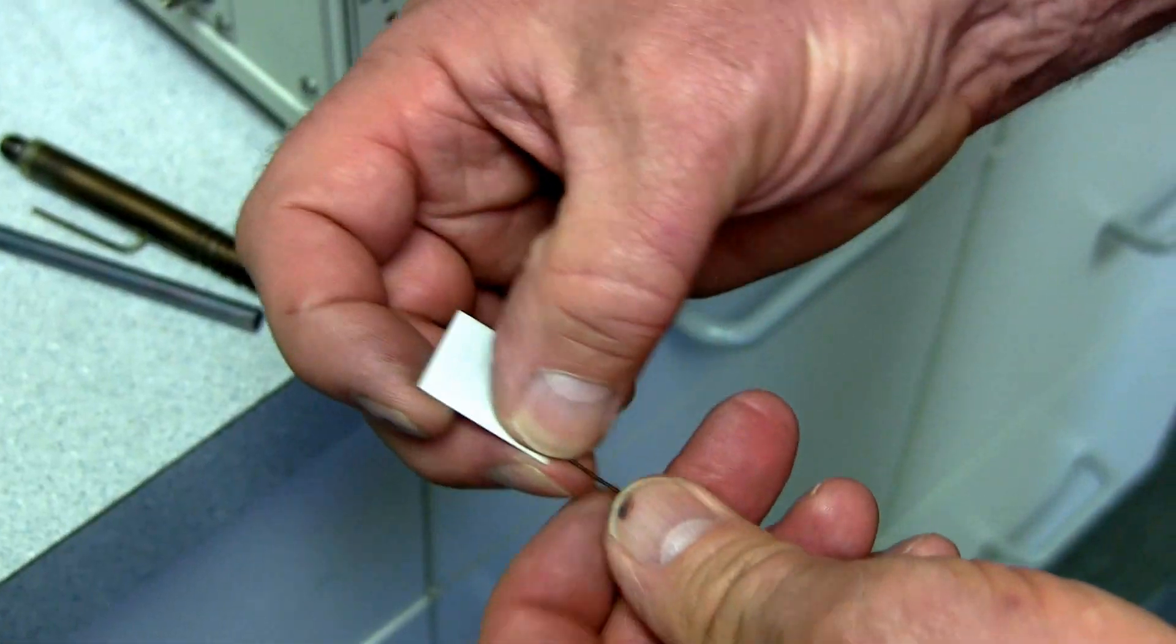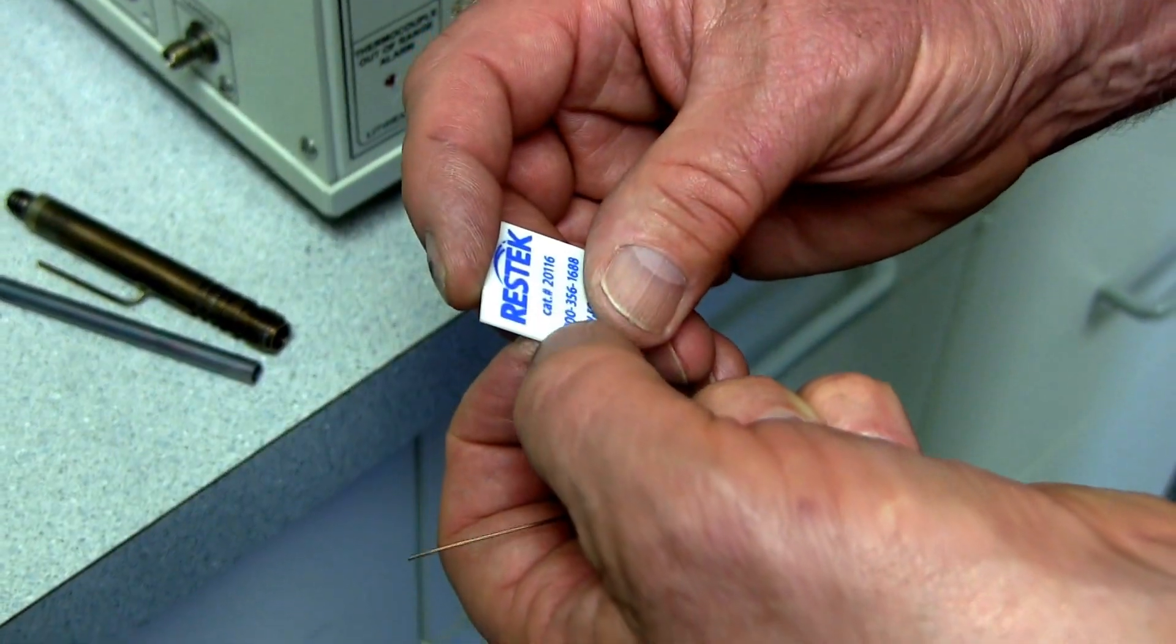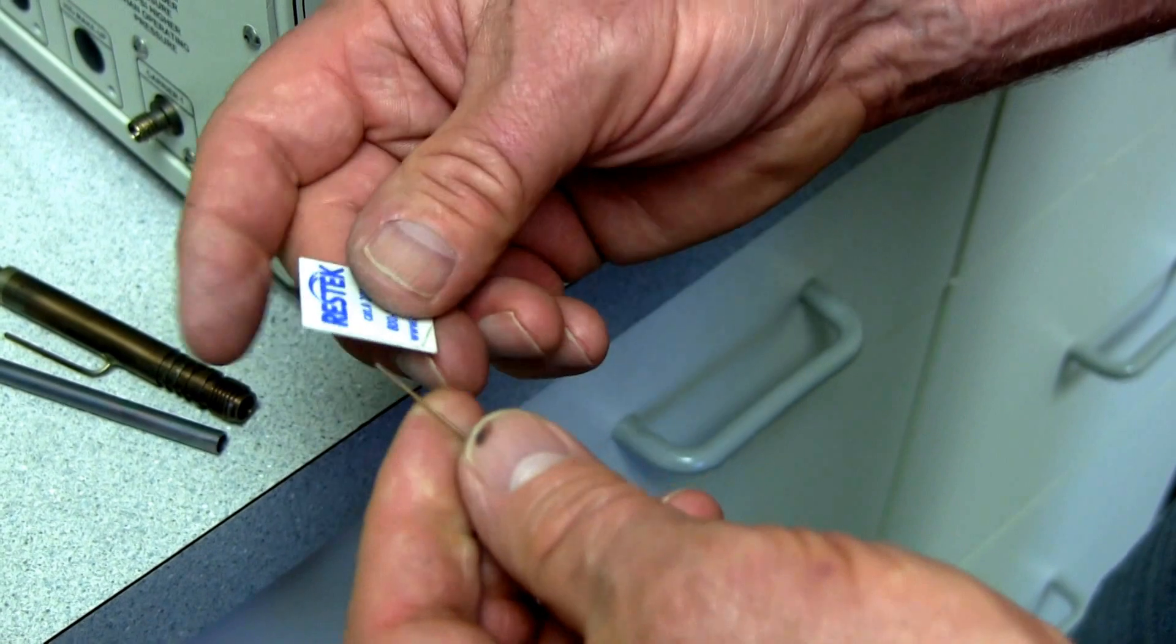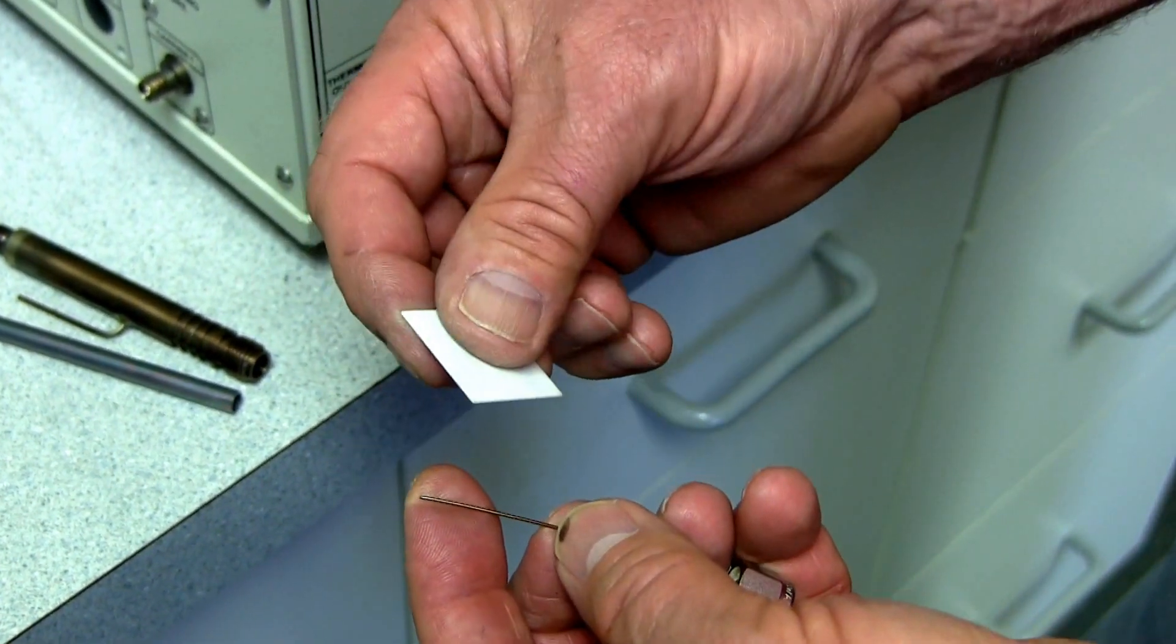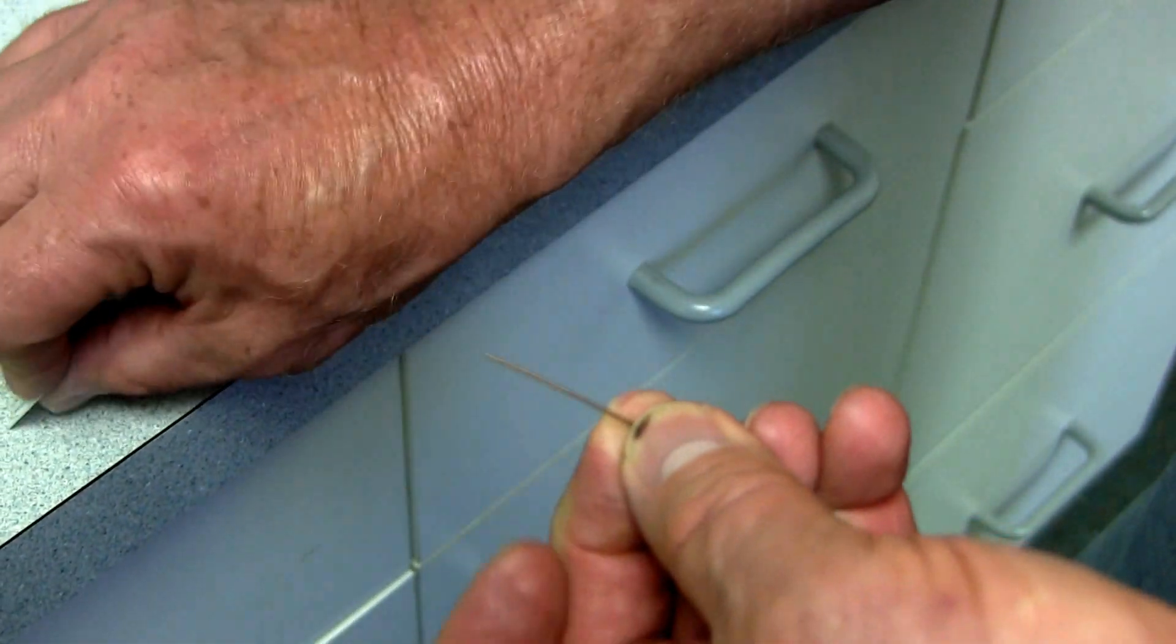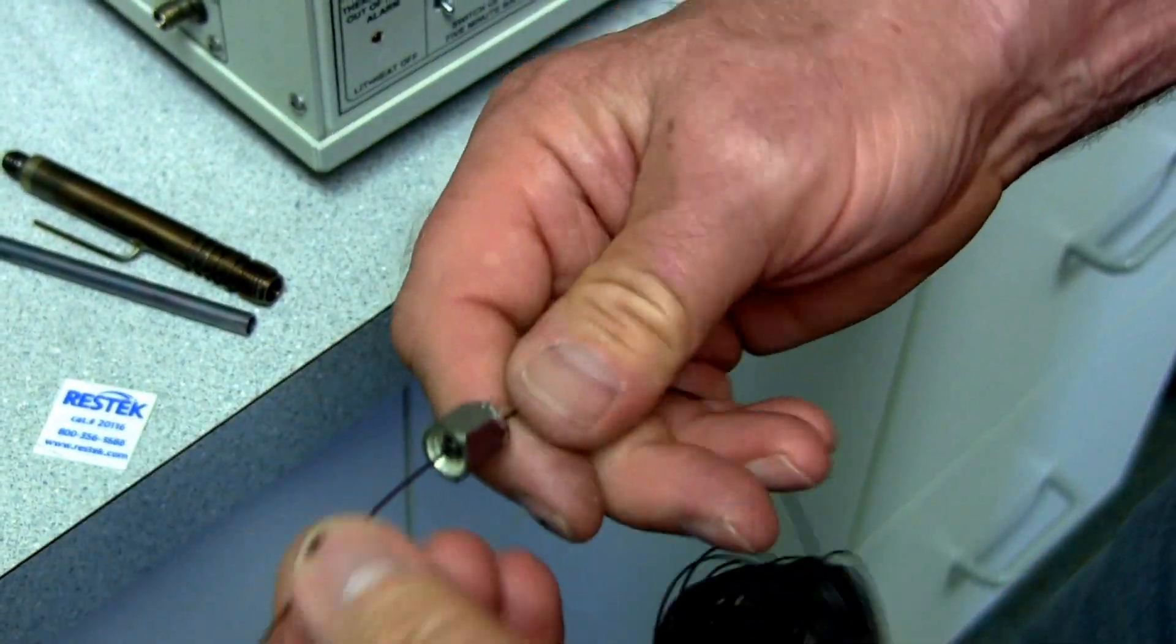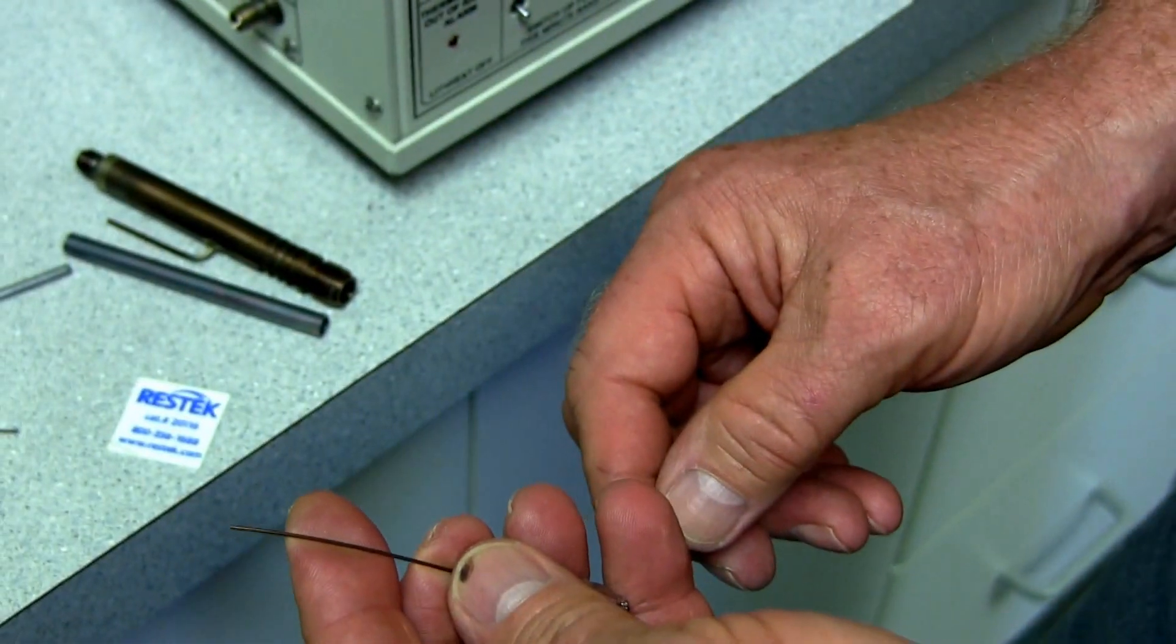Lately the column manufacturers are sending out this what they call a cutting wafer and it's got actually a little abrasive surface on one edge. You have to look at it under a microscope to see that. But you do it the same way. You hold the column between your fingers. You give it a quick little slash with the abrasive disc and then you break it right over your fingernail. Otherwise they won't break. You can't really break these columns unless you give it a deep score first.